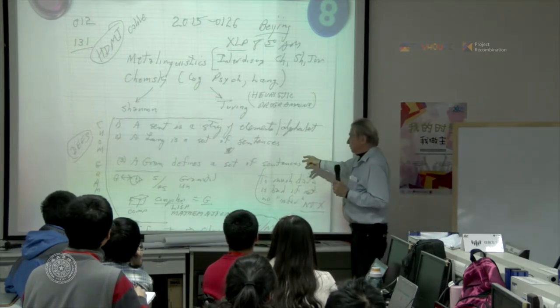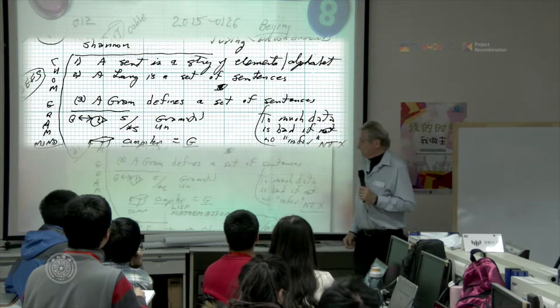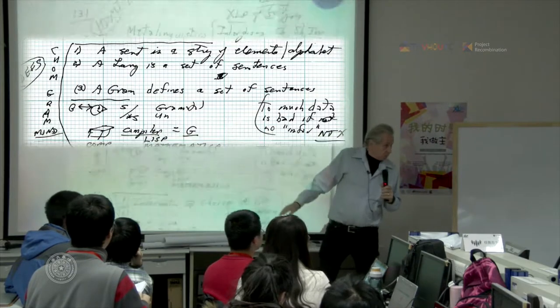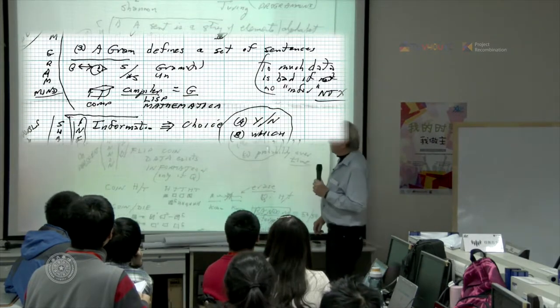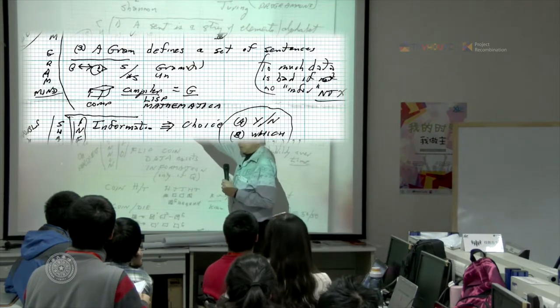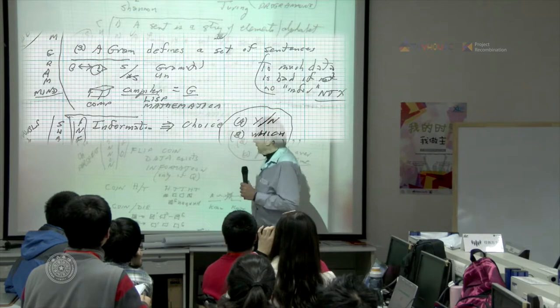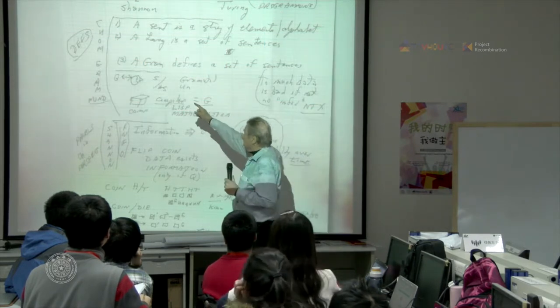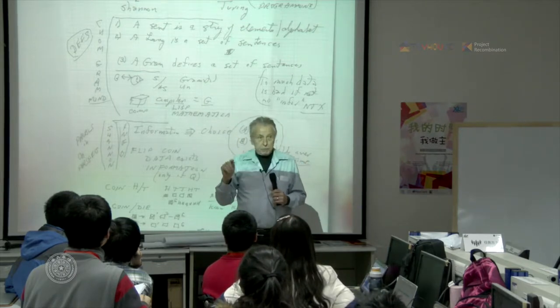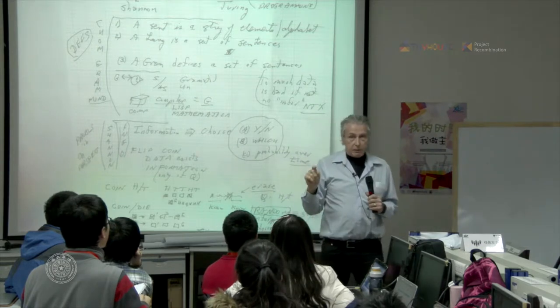Now, a grammar defines a set of sentences. So if you believe this, then in a human head, that's supposed to be a human being there, there is a grammar. And that grammar defines the sentence from a bad sentence. So what it is to know a language is to be able to recognize a good sentence from a bad sentence.